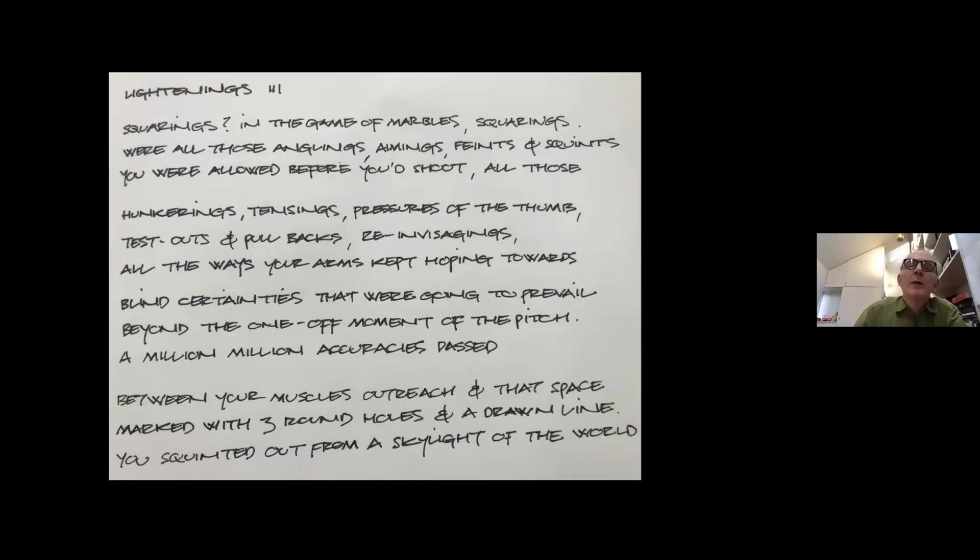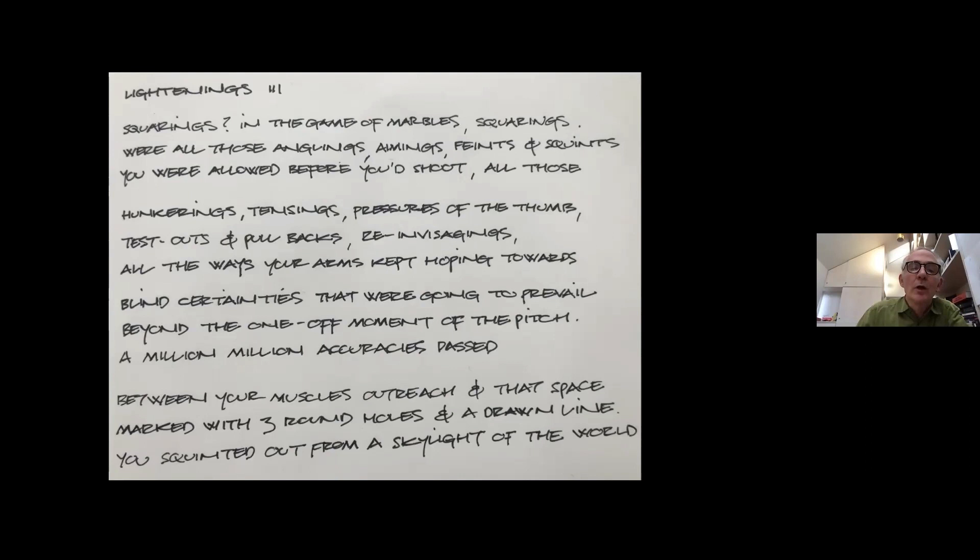Squarings. In the game of marbles, squarings were all those anglings, aimings, feints and squints you were allowed before you'd shoot. All those hunkerings, tensings, pressures of the thumb, test outs and pullbacks, re-envisigings, all the way your arms kept hoping towards blind certainties that were going to prevail beyond the one-off moment of the pitch. A million, a million, a million accuracies passed between your muscled outreach and that space marked with three round holes and a drawn line. You squinted out from a skylight of the world.